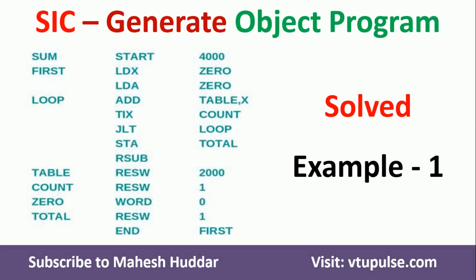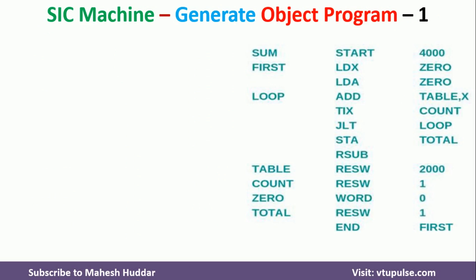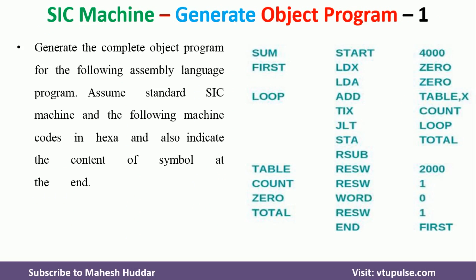Hi, welcome back. In this video, I will discuss how to convert an assembly language program into an object program in SIC machines. This is solved example number one. The link for other solved examples is given in the description below. We have been given this assembly language program, and we have to convert it into an object program using pass one and pass two algorithms. We will see the process we need to follow in the next slide.